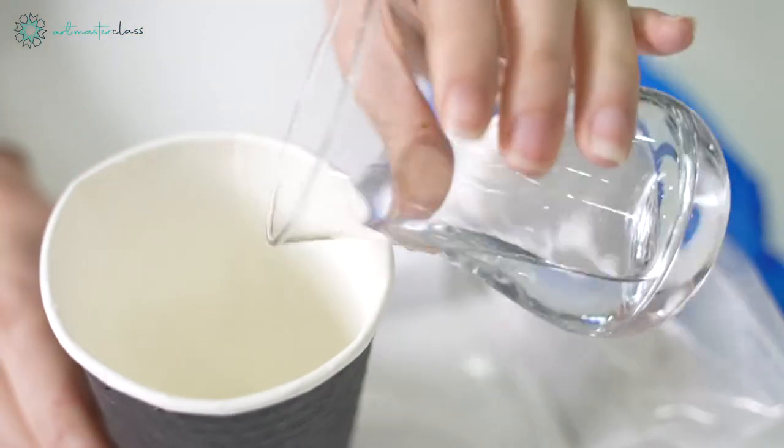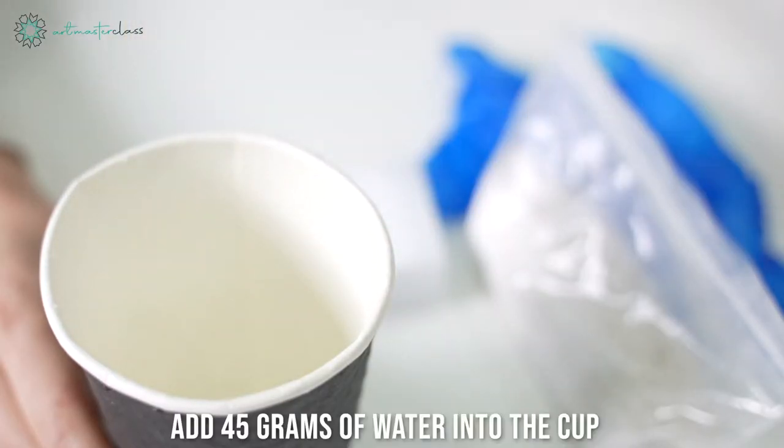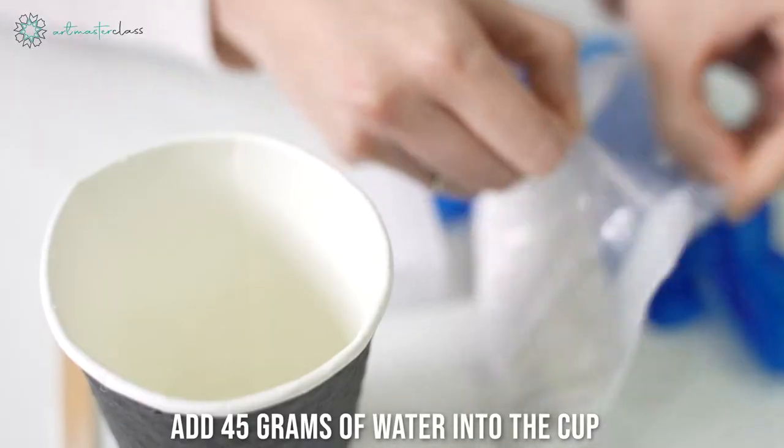After waiting five to six hours for the glue to dry, it's time to begin the plastering process. Firstly, begin by adding 45 grams of water into the provided cup.